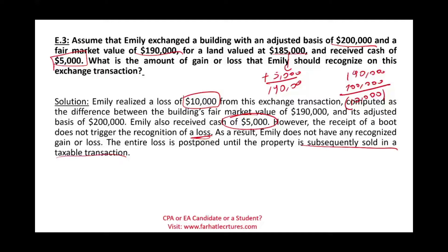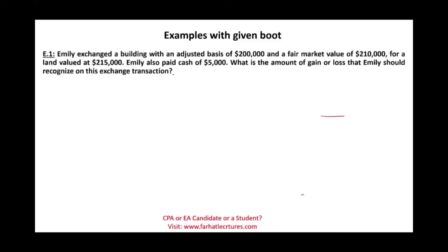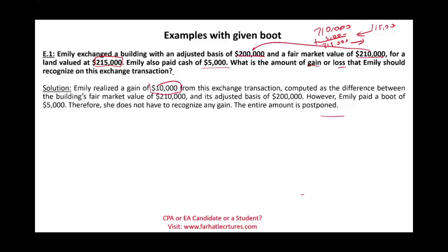Let's look at an example with boot given. Emily exchanged a building with an adjusted basis of $200,000 and fair value of $210,000 for land worth $215,000. Emily has to pay $5,000 cash to equalize the deal, so she gave boot — she paid it, did not receive it. Emily realized a gain of $10,000, which is the difference between the fair value of $210,000 and its adjusted basis of $200,000. Since Emily paid a boot rather than received one, she does not have to recognize any gain — the entire amount is postponed. Remember, the boot makes a difference with gain only if the boot is received.